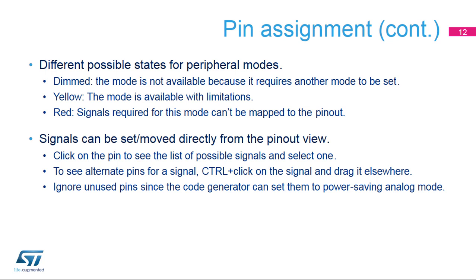There are different possible states for peripheral modes. Dimmed: the mode is not available because it requires another mode to be set — place the mouse pointer over the dimmed mode to see the reason, as it may require a disabled clock source or other peripheral dependencies. Yellow: the mode is available with limitations because some options are blocked by conflicts — for example, the USART may not be configured to synchronous mode because all the selectable clock pins are taken. Red: signals required for this mode cannot be mapped to the pinout, which may occur if a crucial signal has all its alternate pins used by other peripherals.